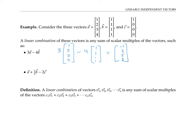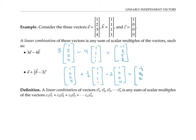Another linear combination would be a plus one half b minus two c, which works out to the vector with entries negative one half, five halves, seven halves, nine halves. In general, a linear combination of vectors v1 through vn is any sum of scalar multiples of the vectors. We can put in any real numbers for c1 through cn, including zeros and negative numbers, which is why we can think of subtraction as a sum where one of the coefficients is negative four.